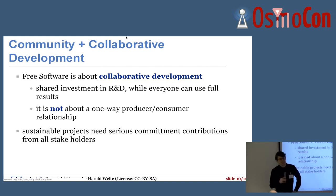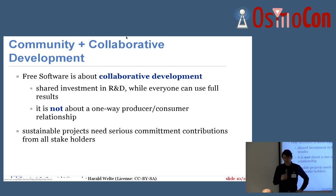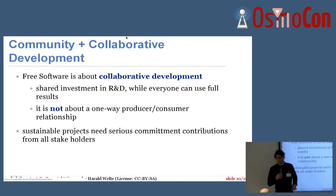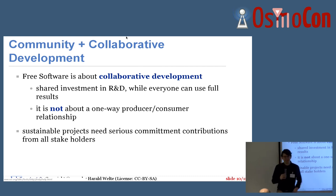Since not everyone shares the history or background in free software: free software is not primarily about somebody getting some software for free, but it's really about doing collaborative development where everyone brings something into the project and in the end everyone gets all the results. Some people have characterized this as the cooking pot economy — you're cooking something, everyone brings some ingredients, and in the end everyone can eat from that pot. The difference is that in software and non-tangible goods, everyone can have the whole pot and you can copy it as many times as you want. It's sort of a bad analogy, but this is really what it's about — it's not about a one-way consumer-producer relationship.